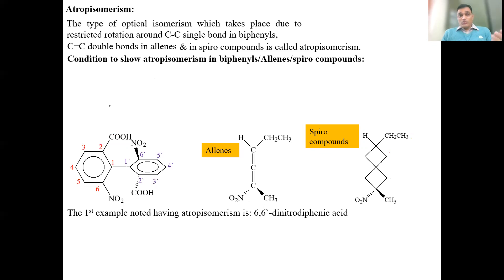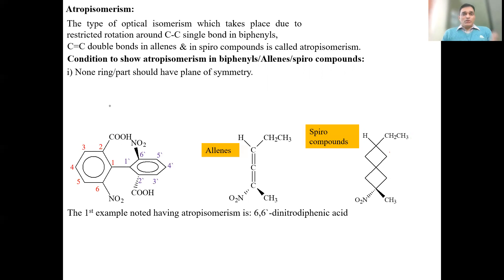Now we look at the conditions. What special things must be present in biphenyls, allenes, and spiro compounds for them to show the atropisomerism property? The first condition, already seen in the definition, is: there must be restricted rotation around the carbon-carbon single bond in biphenyls. In allenes, it happens automatically because there are already two double bonds emanating from the same carbon atom. In spiro compounds also, we can restrict rotation by introducing bulky groups.